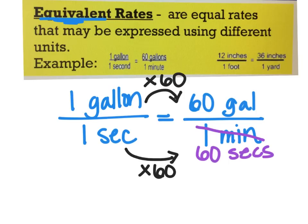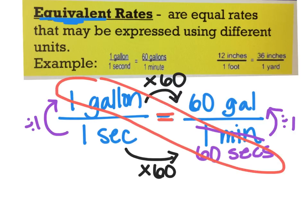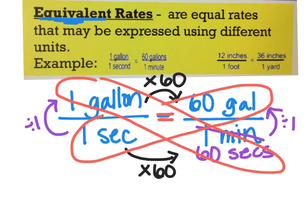Now I could also go up and down — from one to one, that's times one; same thing on the other side. The third way to test is looking at the diagonals. When we have a proportion or equal ratios, the diagonals should be equal. One times 60 is 60, and one times 60 is also 60. This works because I have the same labels: gallons and seconds, gallons and seconds. So these two rates are equal — one gallon in one second is the same as 60 gallons in 60 seconds.